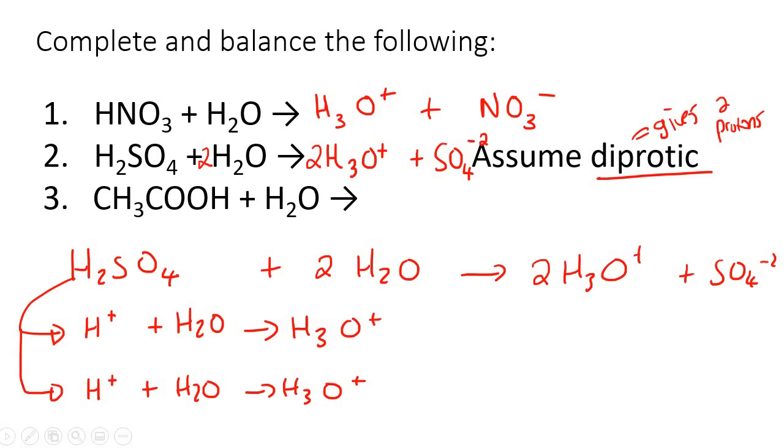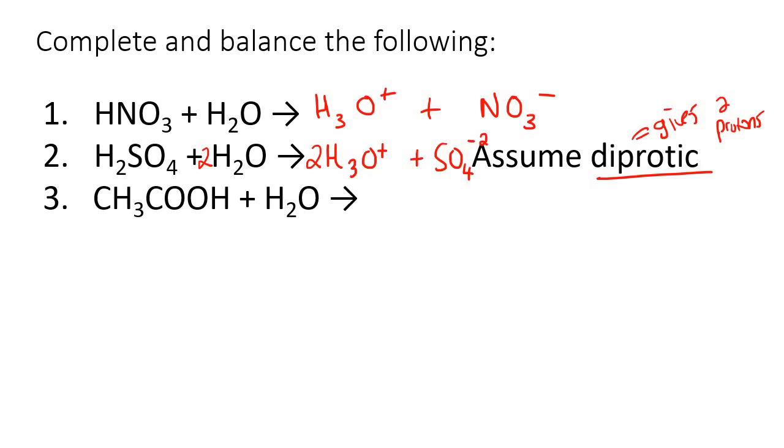Now moving on to number three. A lot of students get a bit confused here. With ethanoic acid, it only gives away this hydrogen at the end. It does not give away these three hydrogens. So it gives away the hydrogen, so that becomes H3O plus. And then this one becomes CH3COO negative. And that is it. It's now balanced.